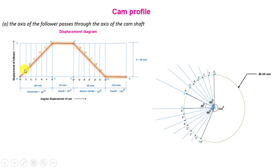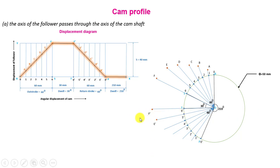Using a compass, take distance 1A and with point 1 as center draw an arc to get point A. Similarly, take distance 2B with point 2 as center to get point B, then 3C to get point C, and likewise points D, E, and F for the outstroke. For the return stroke, take distance 6'F', with 6' as center draw an arc to get point F'. Similarly locate E', D', C', B', and A'. Join all these points with a smooth curve to get the cam profile.